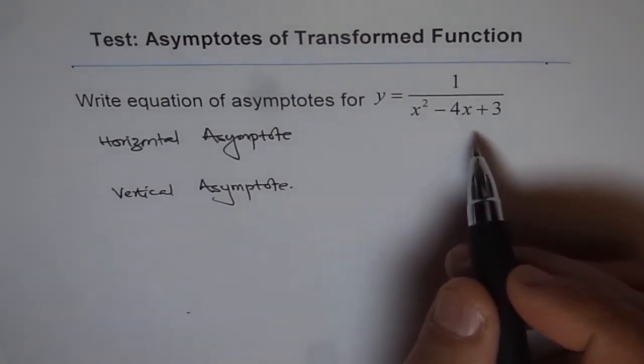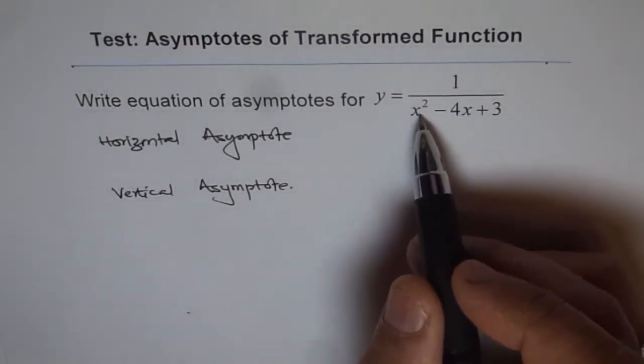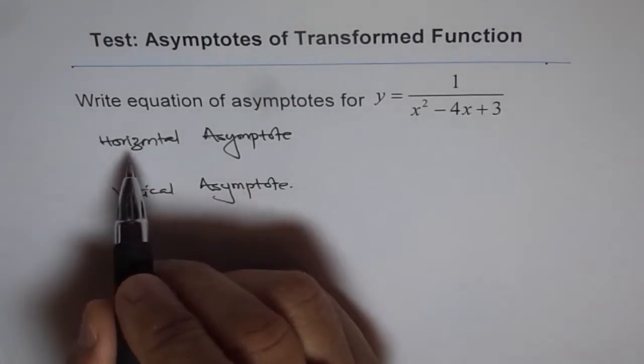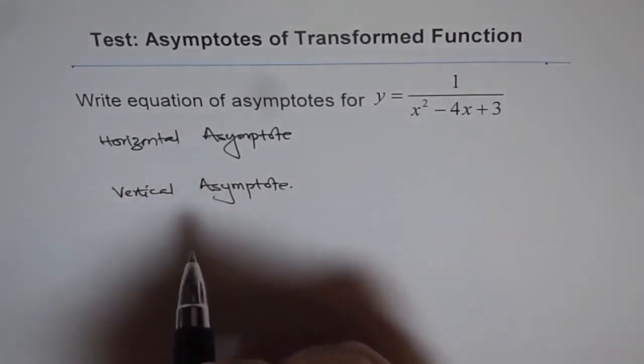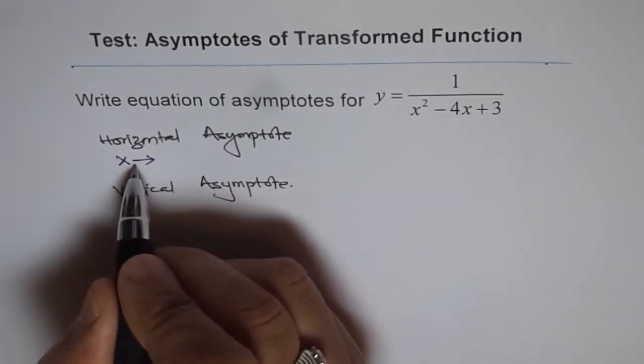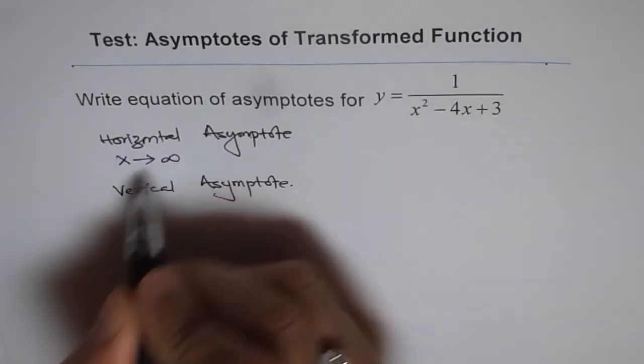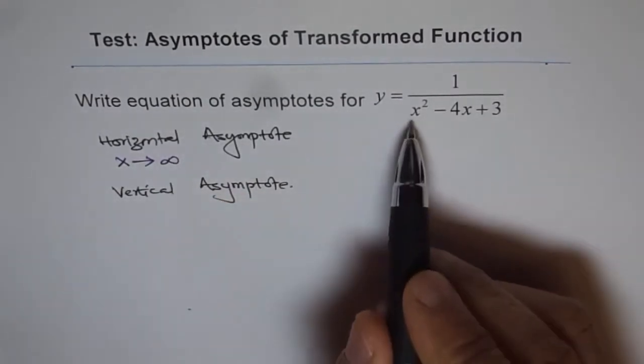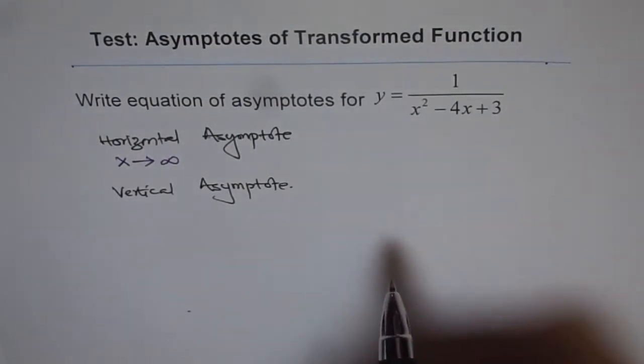In this case, to find the horizontal asymptote, we write x as a very large number. When x approaches a large number, we call it infinity. To calculate, we can plug in a value like 1000 or 10,000, depending on the question.